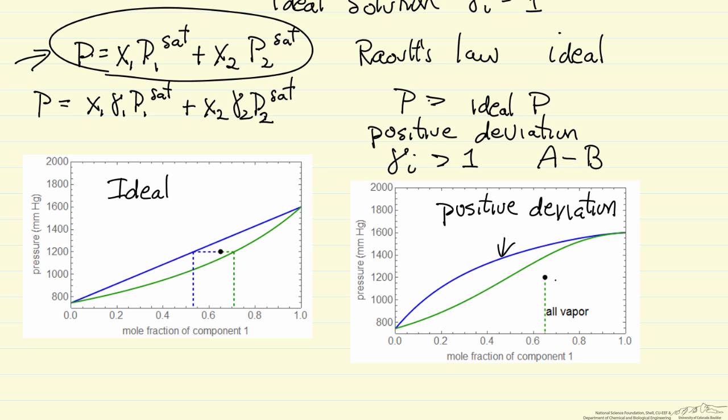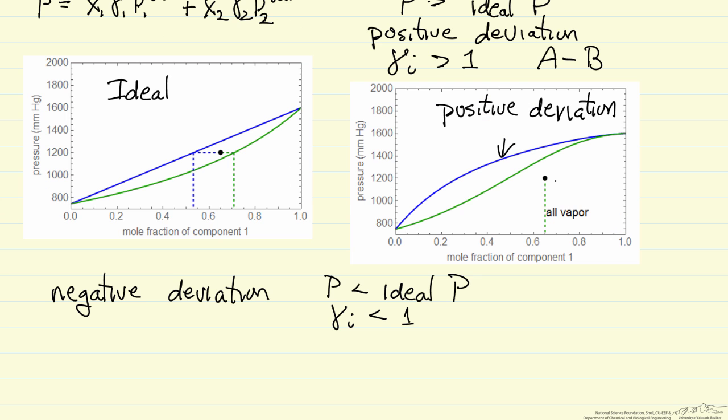Then likewise, a negative deviation just means the line would be below the Raoult's Law line. And so negative deviation means the gammas are less than one. This means now that the A-B interactions are stronger than the AA or BB interactions. In other words, unlike molecules want to be near each other, they have less tendency to go into the gas phase.